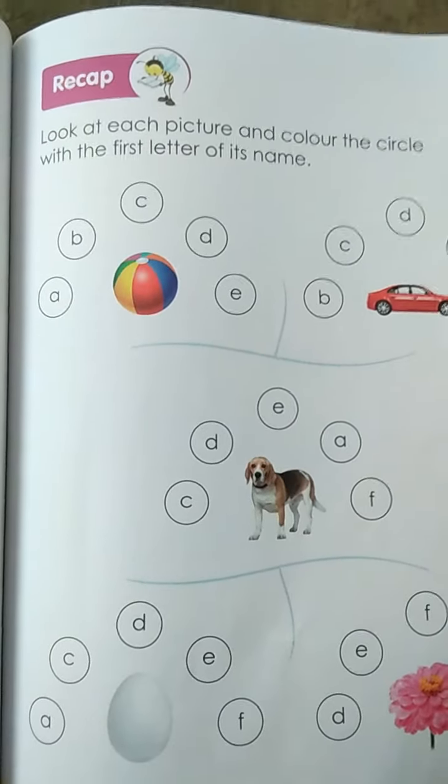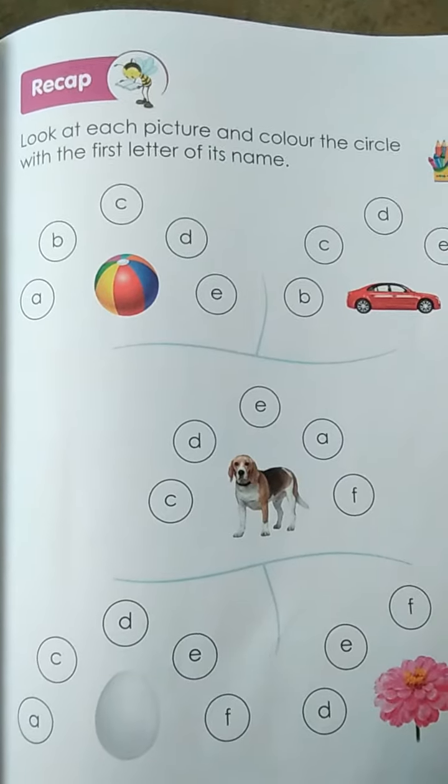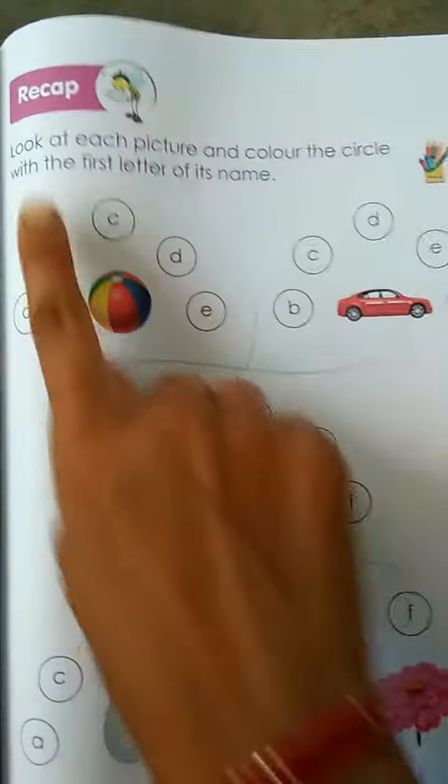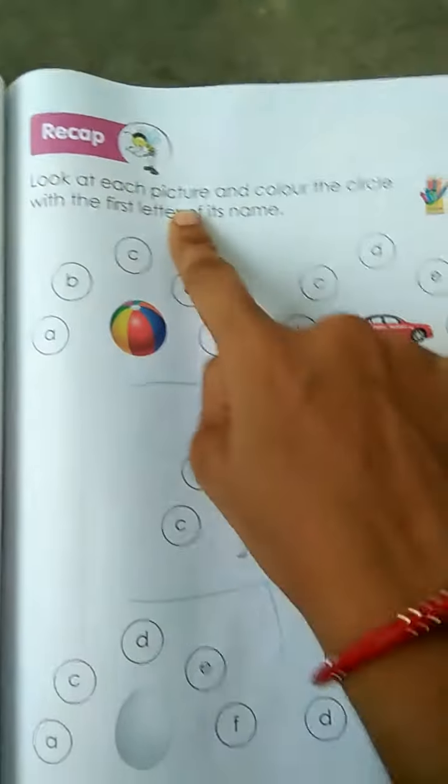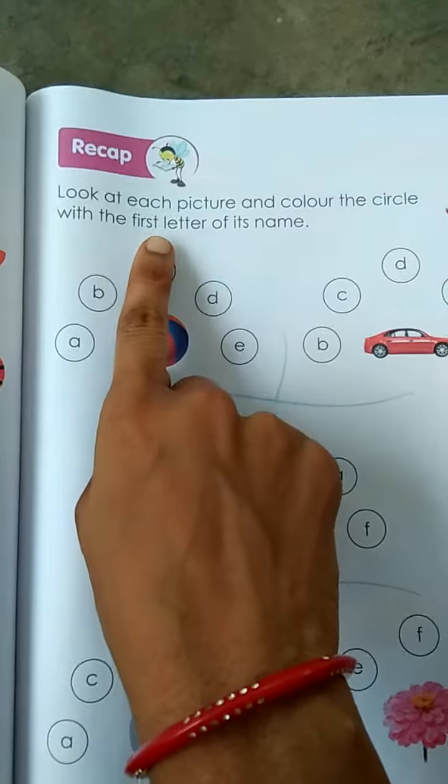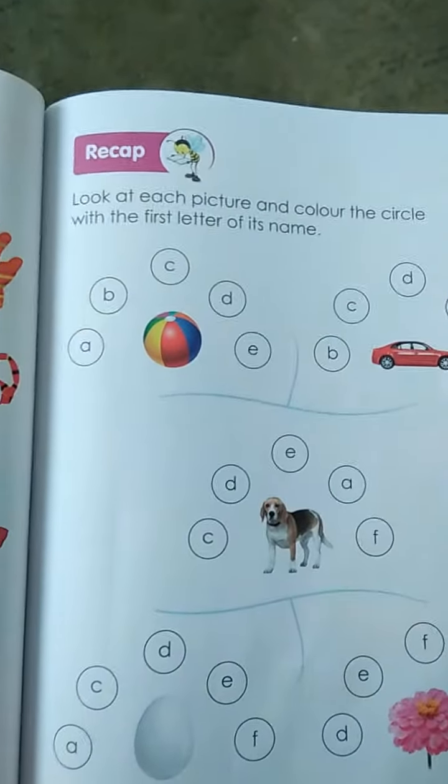Hello kids! Today we have to learn identification of letters. Now look here. Look at each picture and color the circle with the first letter of its name.